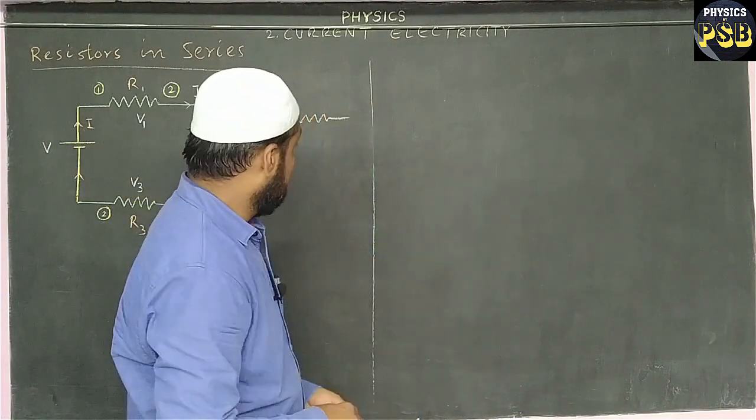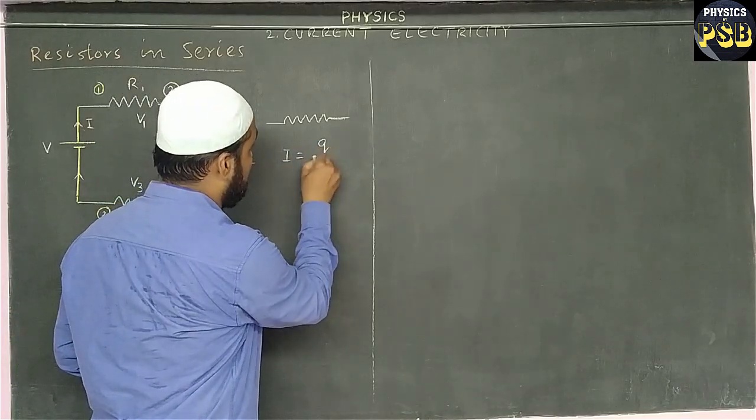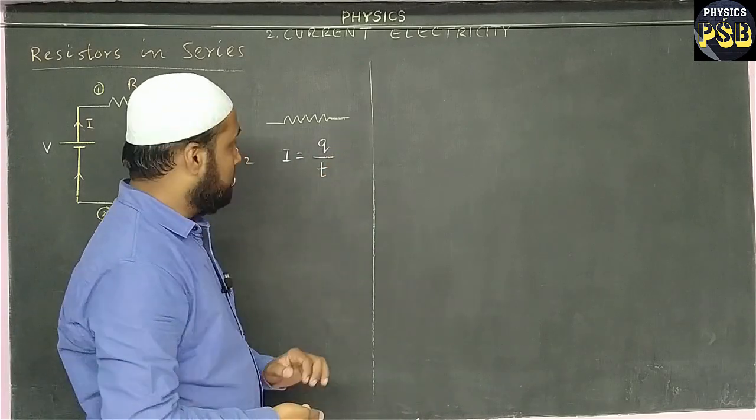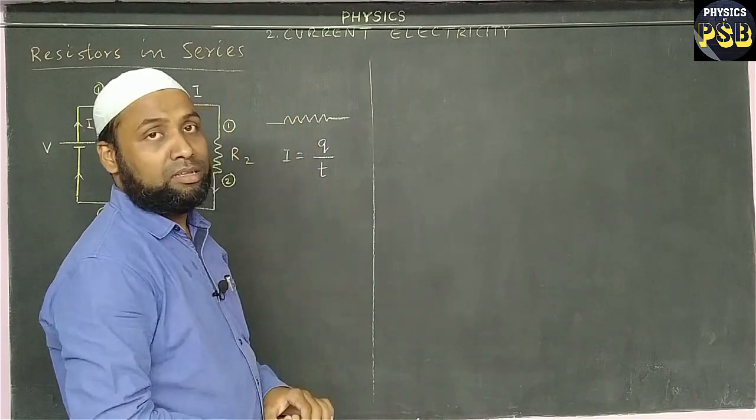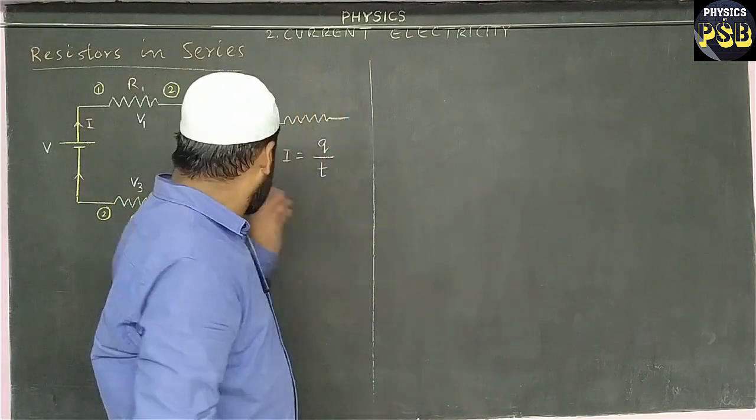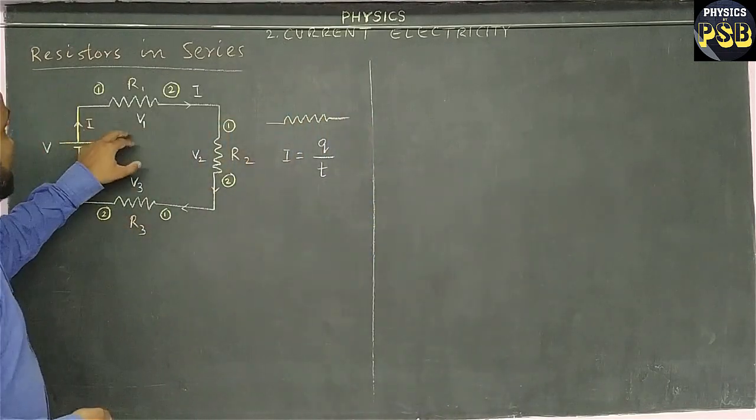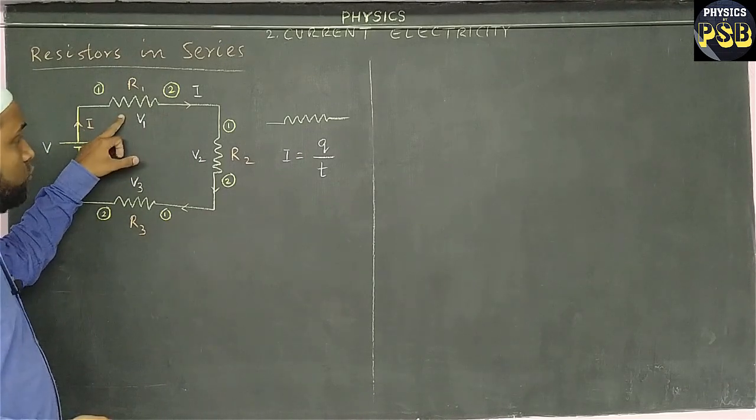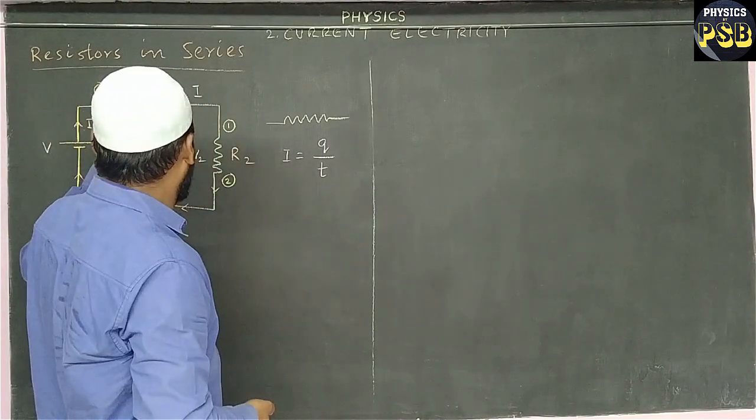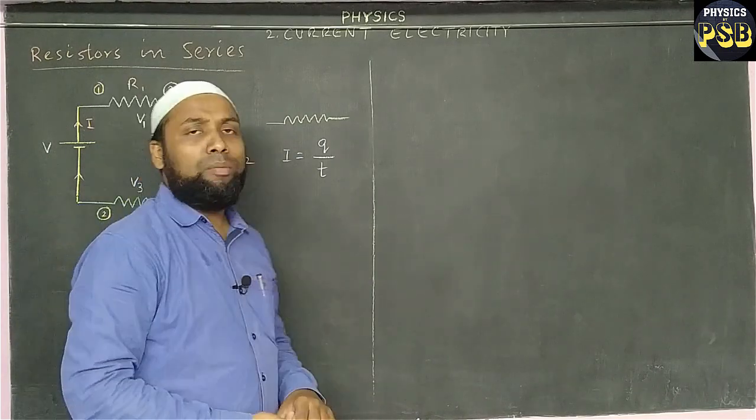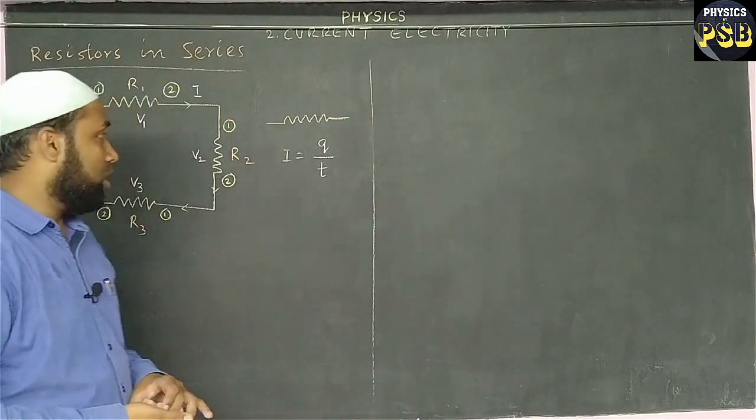Now we know current I is nothing but the rate of flow of charge through a conductor, means the number of charges flowing through a conductor in a given time T. In the circuit we do not have any accumulator to accumulate the charge. So the number of charges flowing through R1 must flow through R2 and R3 as well. So the current in R1, R2, and R3 will be equal to I. The same current flows through R1, R2, and R3.